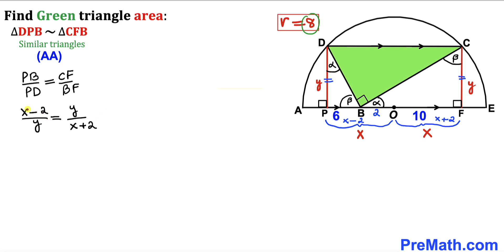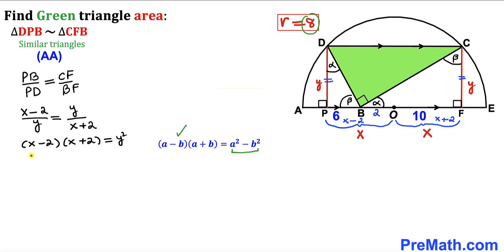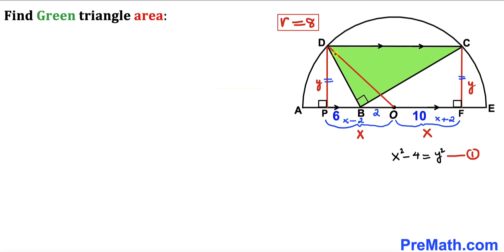Now let's cross-multiply: (x minus 2)(x plus 2) equals y times y, which gives us y squared. Recalling the identity (a minus b)(a plus b) equals a squared minus b squared, the left-hand side becomes x squared minus 4, giving us x squared minus 4 equals y squared. Let me call this equation number 1.